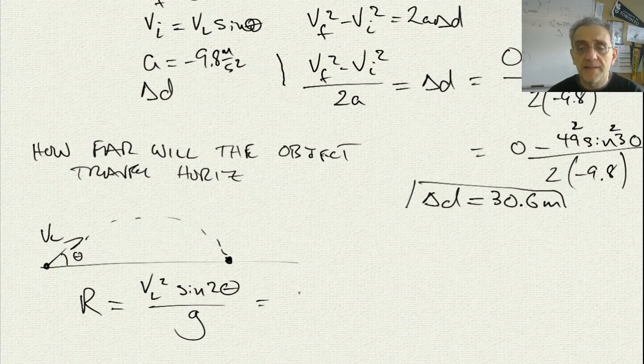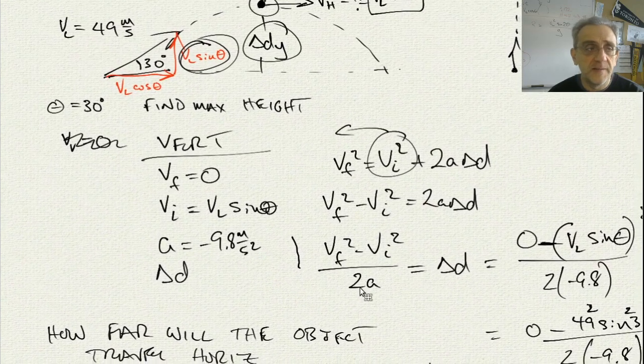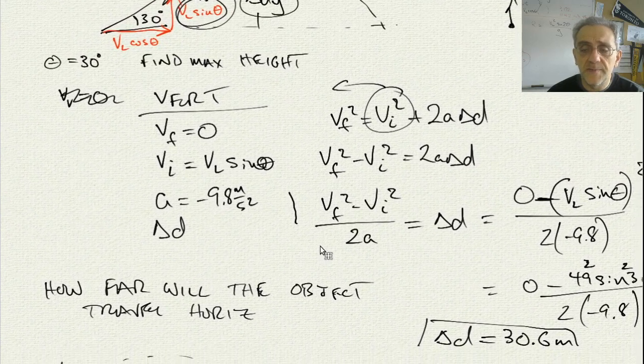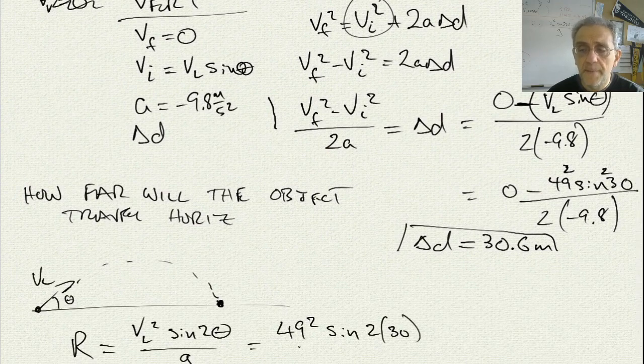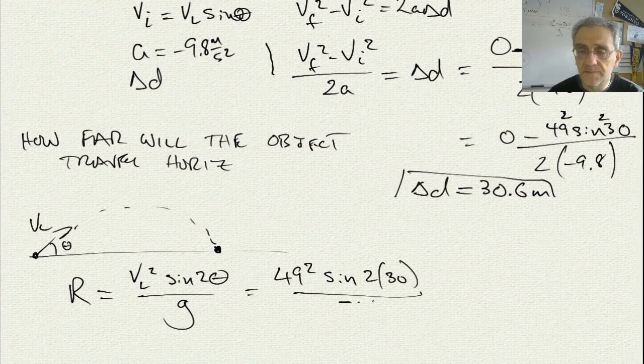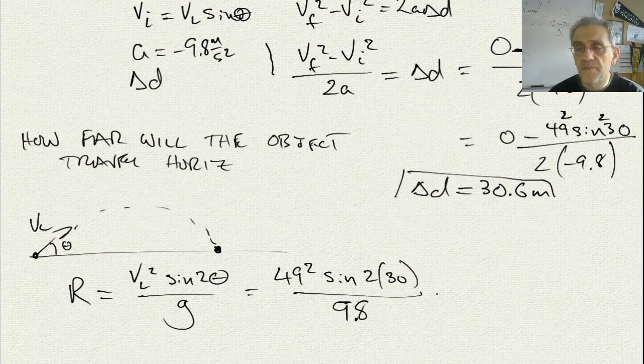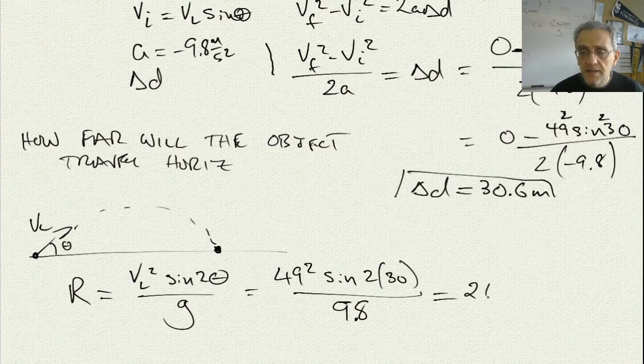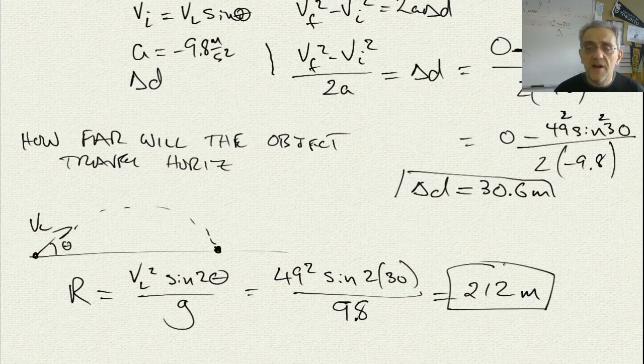And the range equation was VL squared sine 2 theta divided by G. So, in this case, that's going to equal, what was my launch velocity again? It was 49. So, 49 squared sine 2 and theta was 30 degrees, 2 times 30, divided by 9.8. And that's going to give me 212 meters, approximately. But that's how far it goes 212 meters horizontally until it hits the ground again.